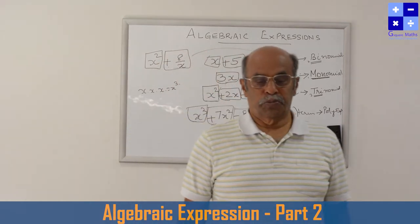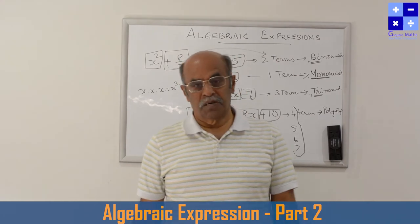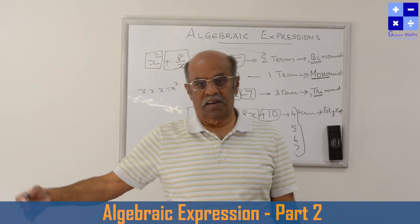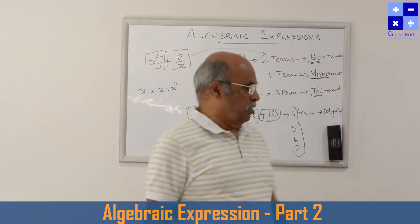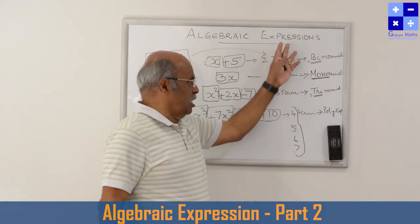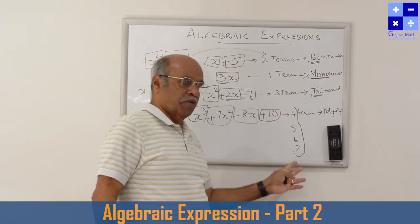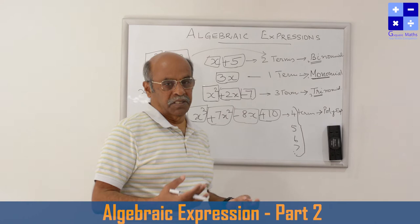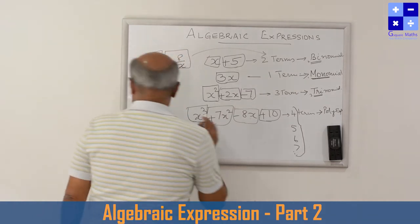An expression with four terms or more is defined as a polynomial expression. We have specific special names for one term, two terms, and three terms — but for four and above, we generally call it a polynomial expression. An expression consisting of more than three terms is called a polynomial expression.